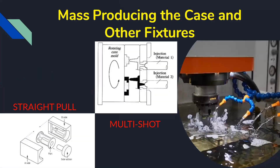Mass producing cases and other fixtures involves understanding how to manage production efficiently. When going for mass production, it is always suggested to buy machines rather than hire people to control production costs. Machines provide consistent accuracy and produce results in less time. People have different skill sets that may not match requirements, and hiring costs can increase. Machines are always going to be cheaper than people — this is an important rule to remember for mass production.